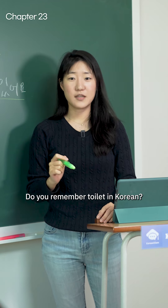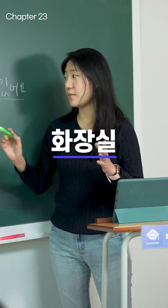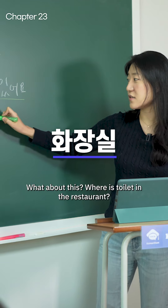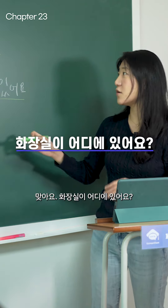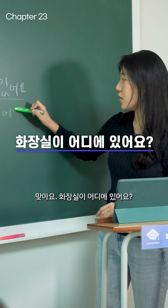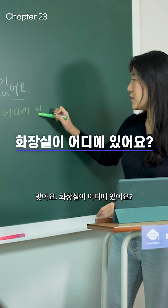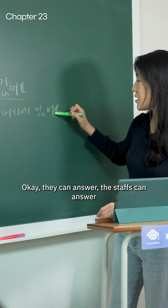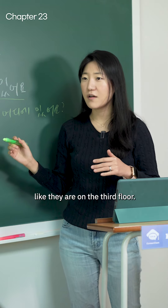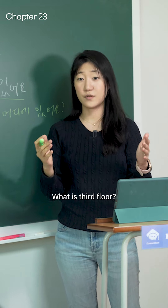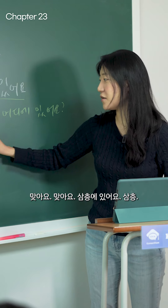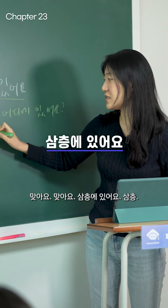Do you remember toilet in Korean? 화장실. 맞아요. So where is the toilet? 화장실이 어디에 있어요? The staff can answer like they're on the third floor. What is third floor? 3층에 있어요. 맞아요. 3층에 있어요.